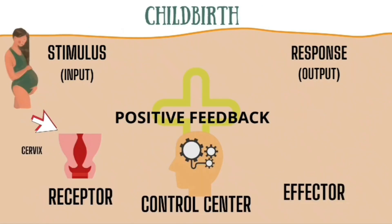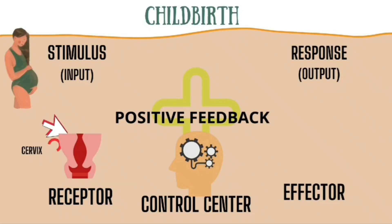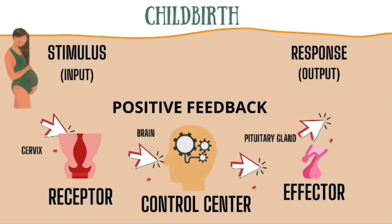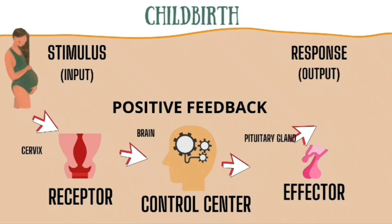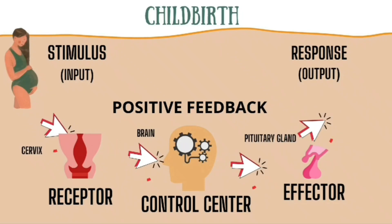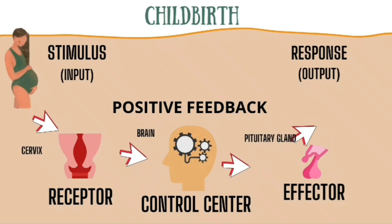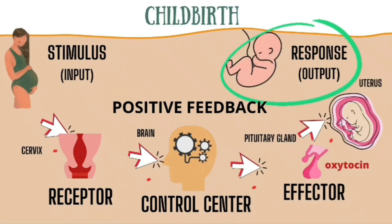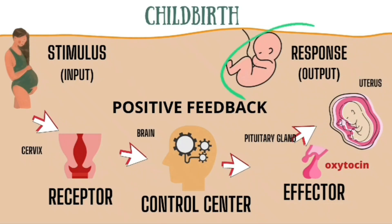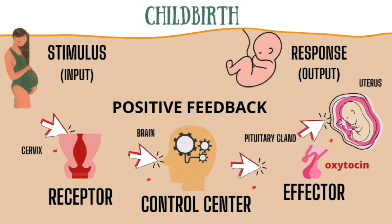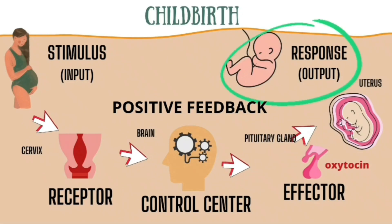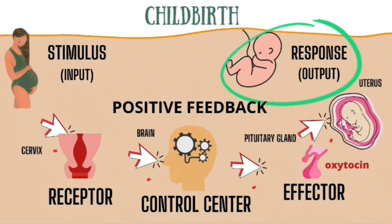Now let us look at examples of positive feedback. In childbirth, the head of the baby pushes against the cervix and stimulates nerve impulses. This information is sent to the brain, and in response, the hypothalamus sends the hormone oxytocin to the pituitary gland. Oxytocin is carried through the bloodstream to the uterus, where it induces uterine contractions. The contractions, which push the baby against the cervix, stimulate the release of more oxytocin, resulting in stronger contractions. This process stops when the baby is born.